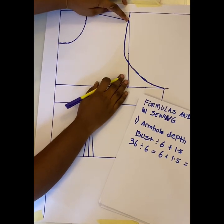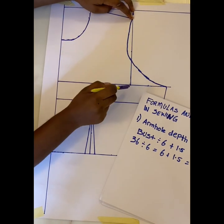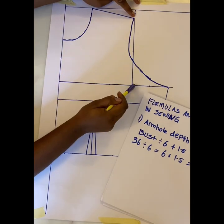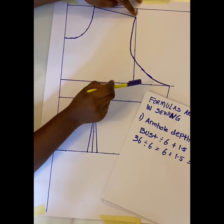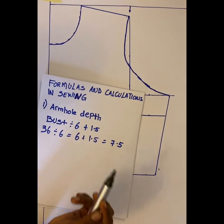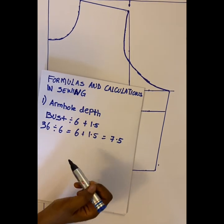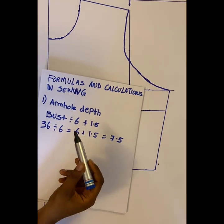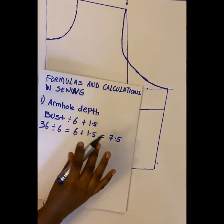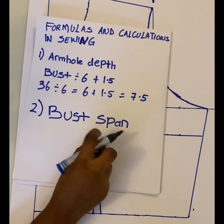The armhole depth is the distance from your shoulder point to the chest point. In situations where you forget to take the measurement on your client, you can always use this formula to get the armhole depth — that is, bust measurement divided by 6 plus 1.5. It's accurate.